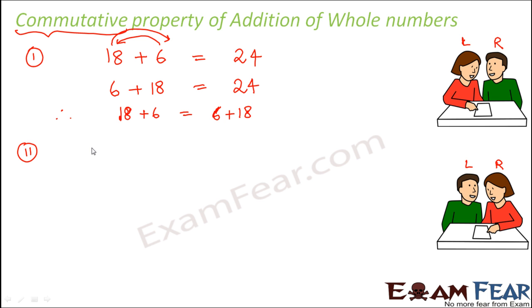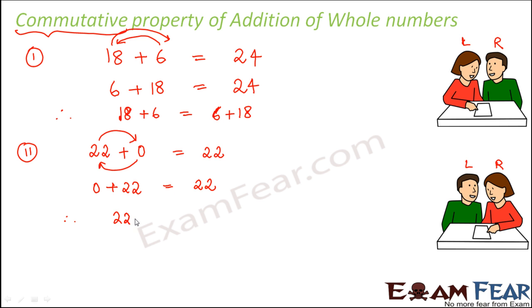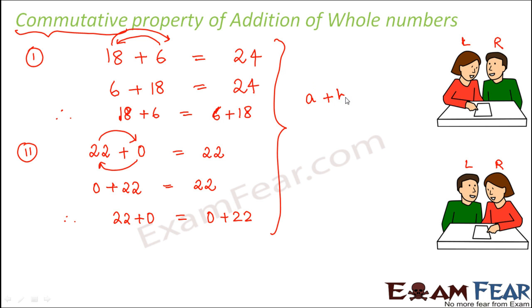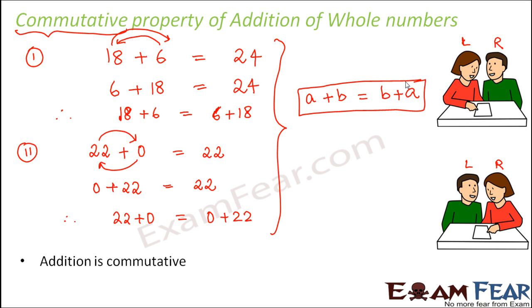Let us take another example. Let us take 0 as one of the numbers. 22 plus 0 is 22. Now let us change the positions — 0 plus 22 is again 22. So we see that 22 plus 0 is equal to 0 plus 22. From these two examples, what we observe is: if A and B are two whole numbers, then A plus B is always equal to B plus A. This is the commutative property of addition. Addition is commutative because even if you exchange the positions of the whole numbers, the result still remains the same.